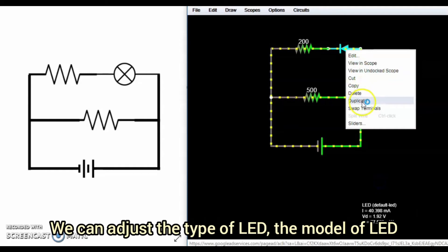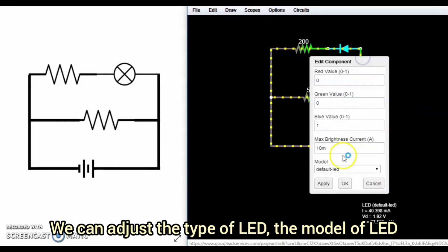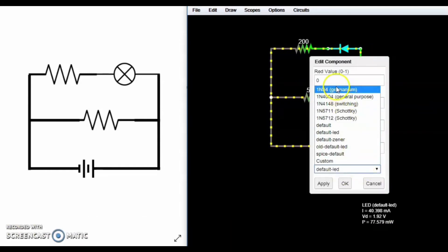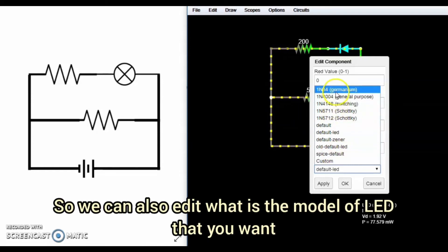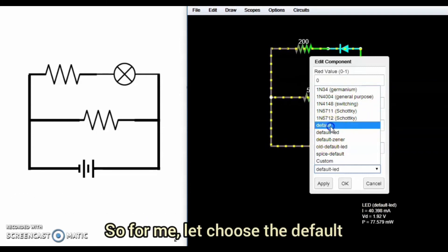We can adjust the type of LED, the model of LED, which is 1N34 germanium, 1N4004 general purpose. So we can also edit the model of the component that we want. For me, let's use the default LED.